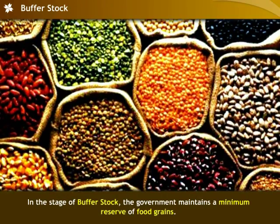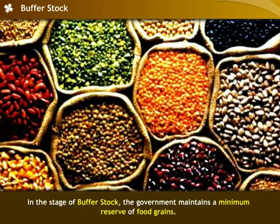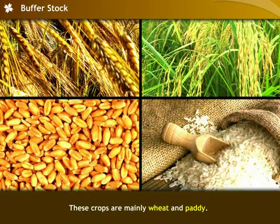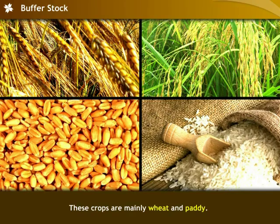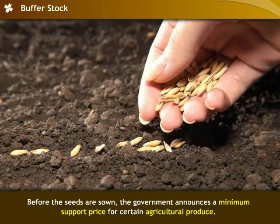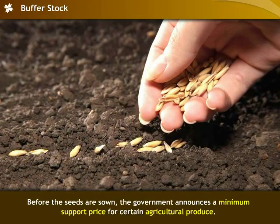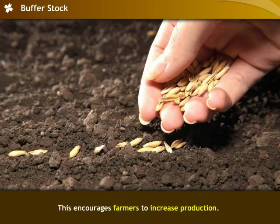In the stage of buffer stock, the government maintains a minimum reserve of food grains, mainly wheat and paddy. Before the seeds are sown, the government announces a minimum support price for certain agricultural produce. This encourages farmers to increase production.